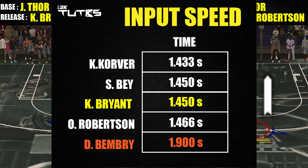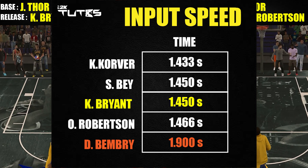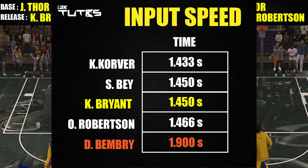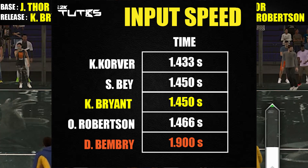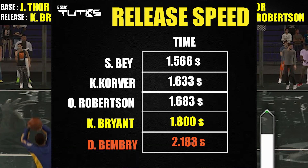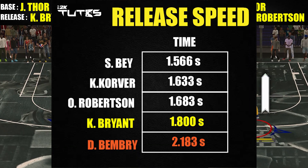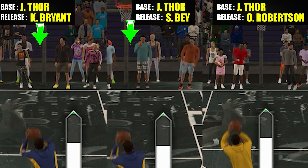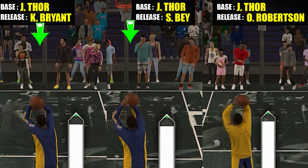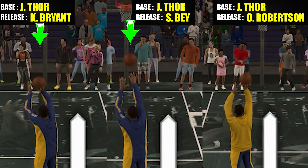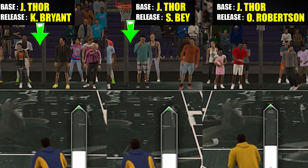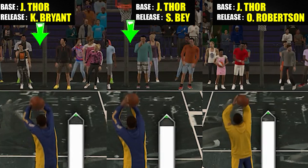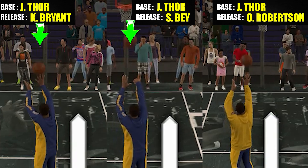In terms of input speed, Kobe is tied up in second place — there's a slight difference but it won't be noticeable in real time. By the way, I tested Bembry just for us to have some reference on how slow a release can be. For the actual release speed, Kobe is right at the end — the input speed is about the same as Bay, but you can notice it's not releasing the ball straight away.